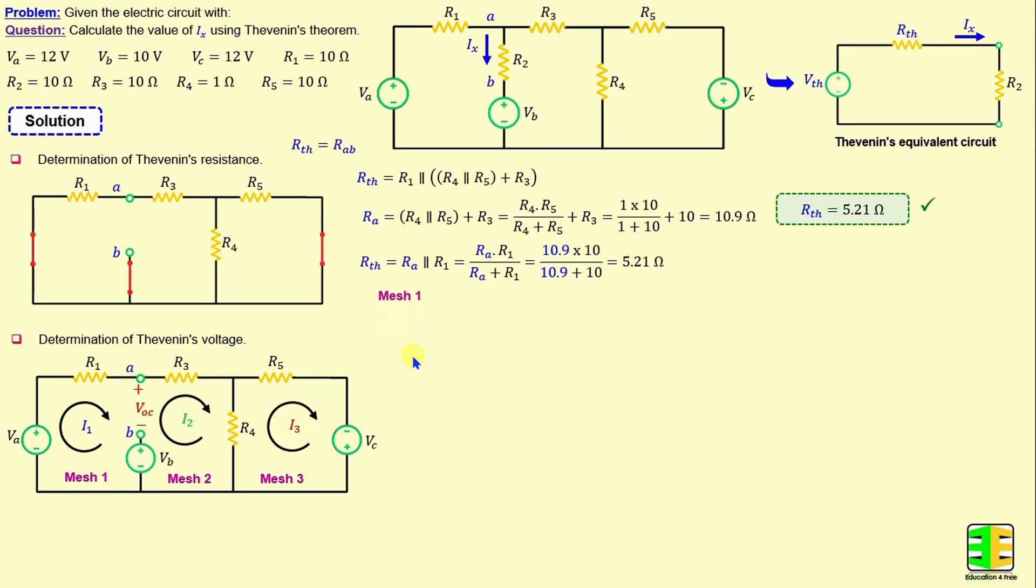By applying Kirchhoff's voltage law in mesh 1, we can write negative VA plus R1 times I1 plus VOC plus VB equals 0. The current here is equal to 0 because we have an open circuit. That means I1 is equal to I2. If we replace I1 with I2 and substitute the numerical values, we obtain negative 2 plus 10 times I2 plus VOC equals 0.